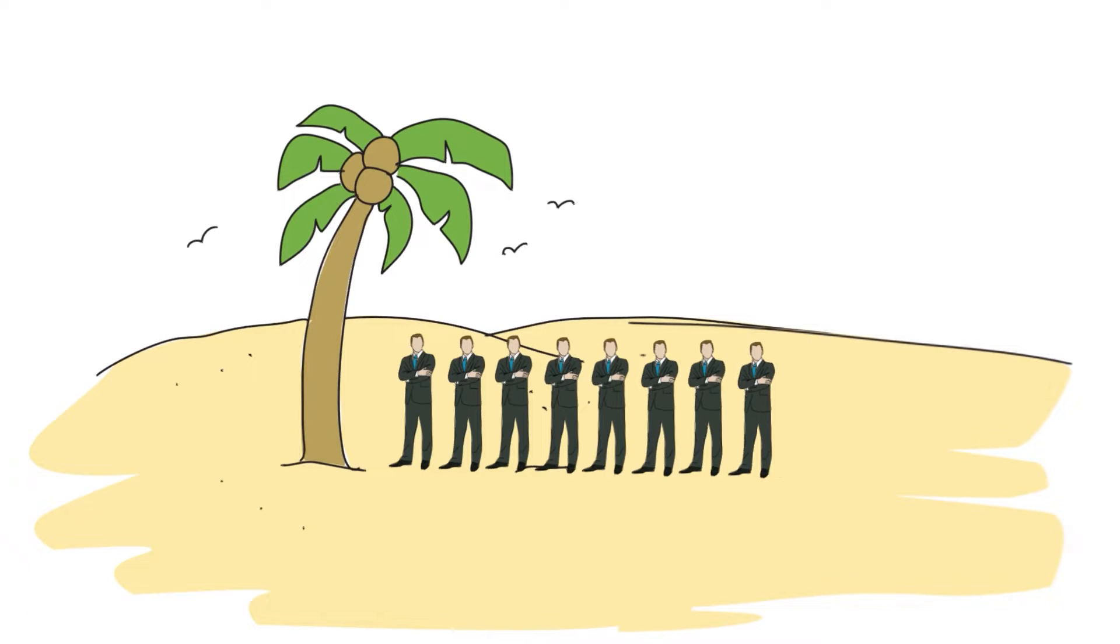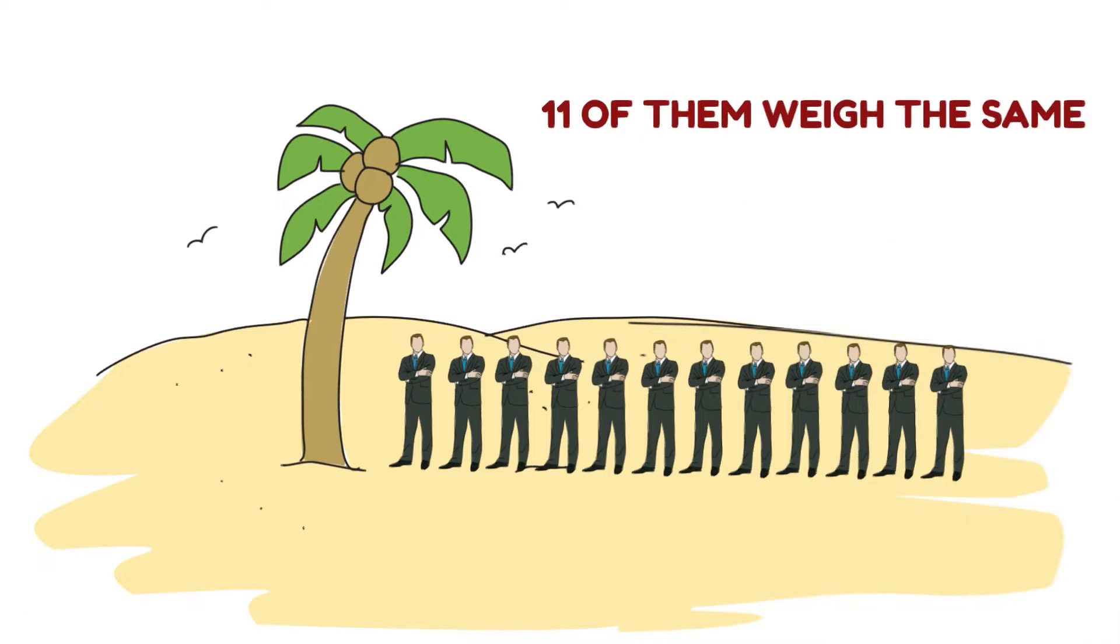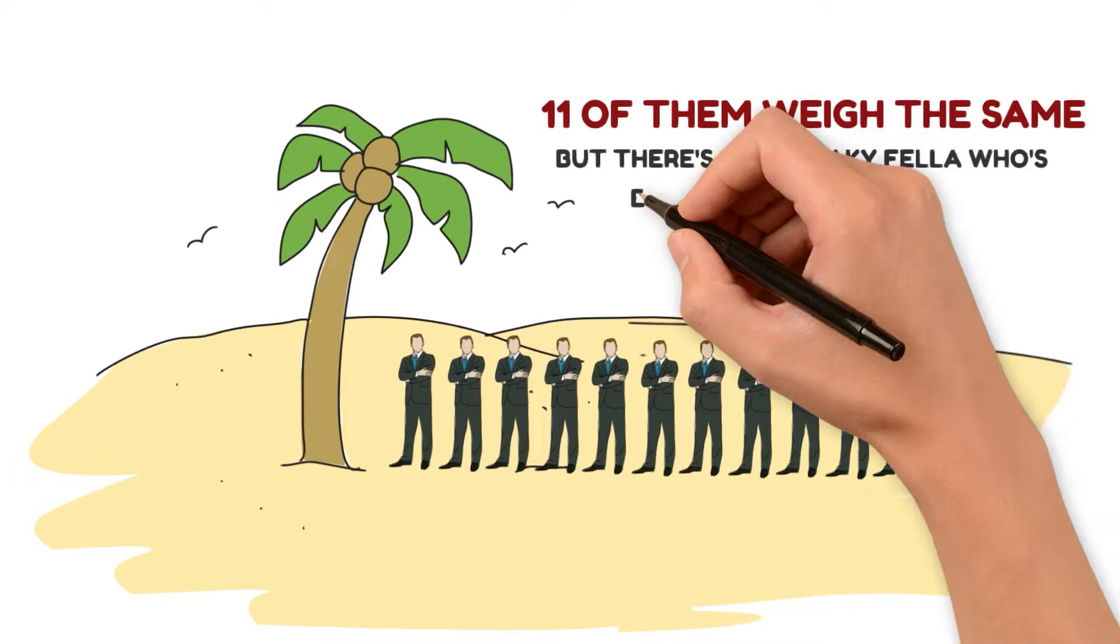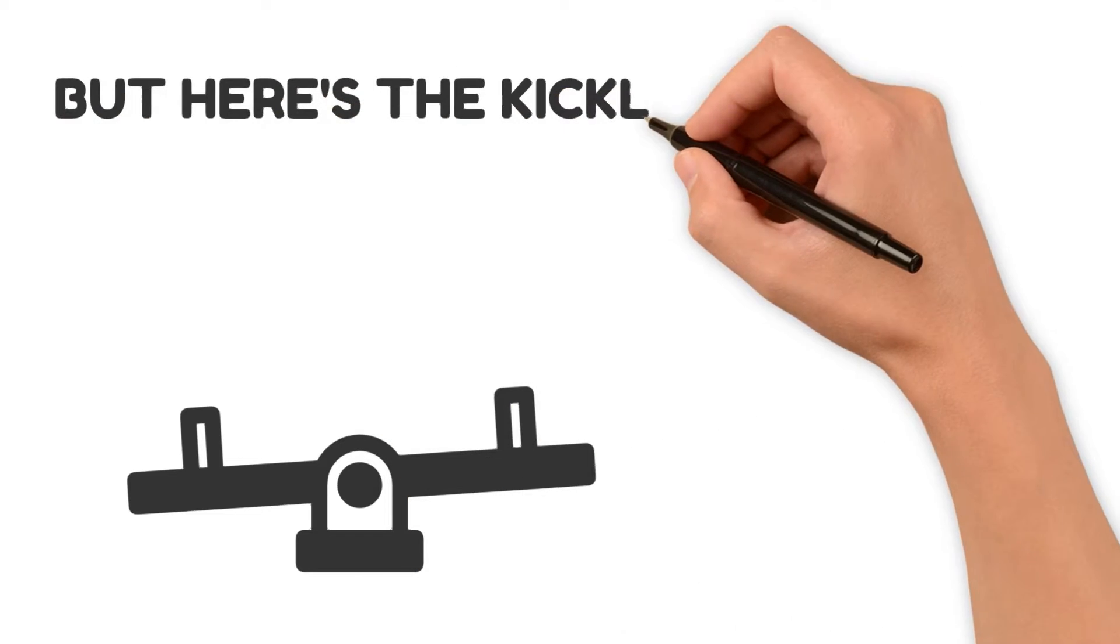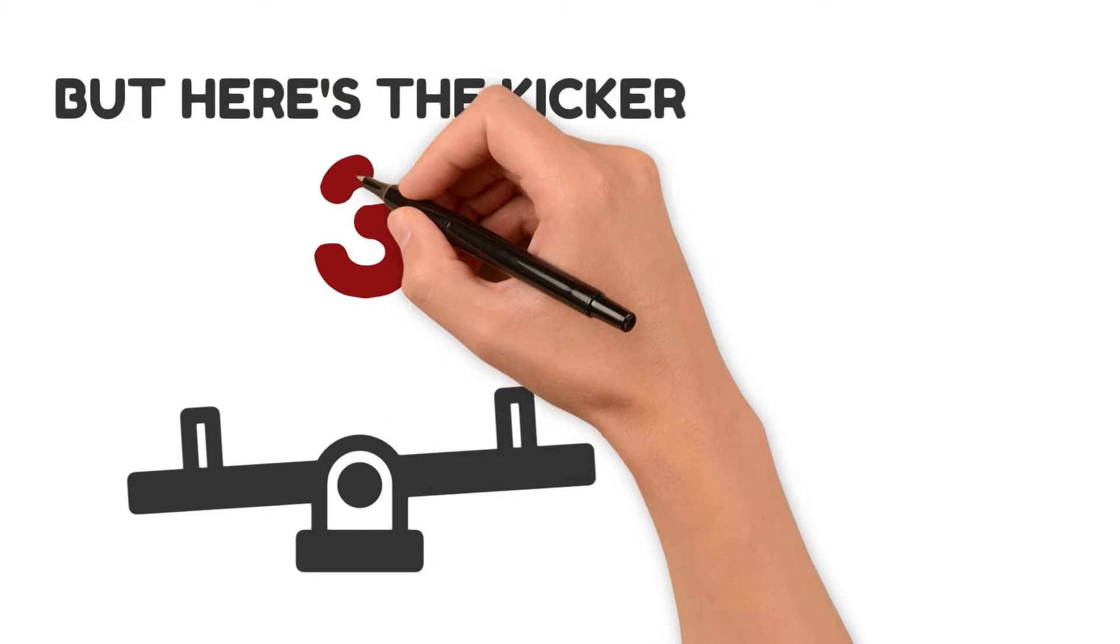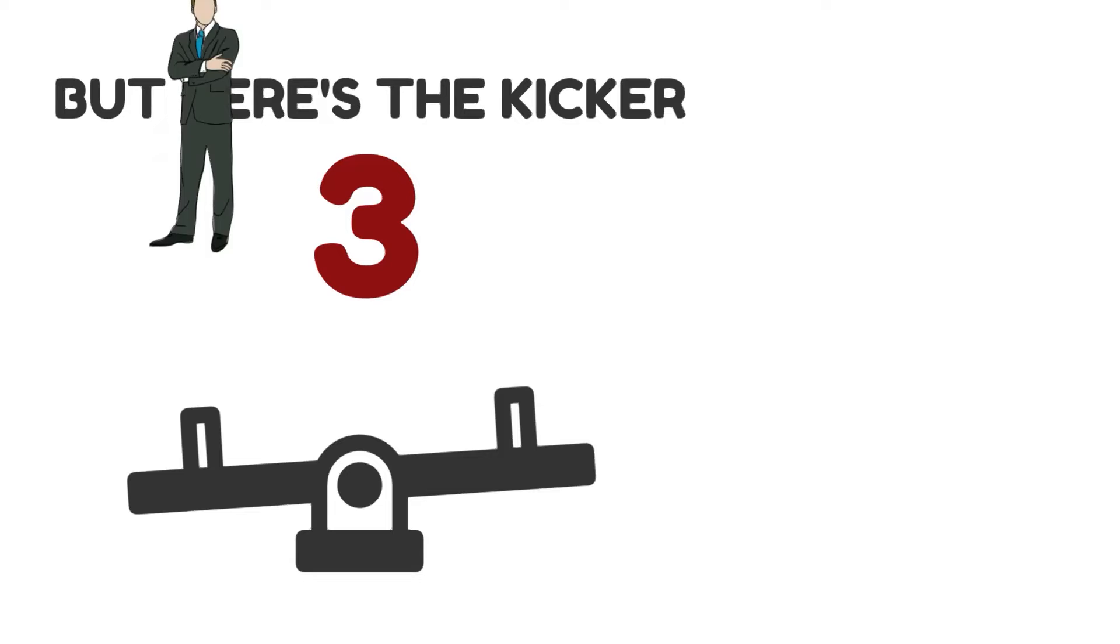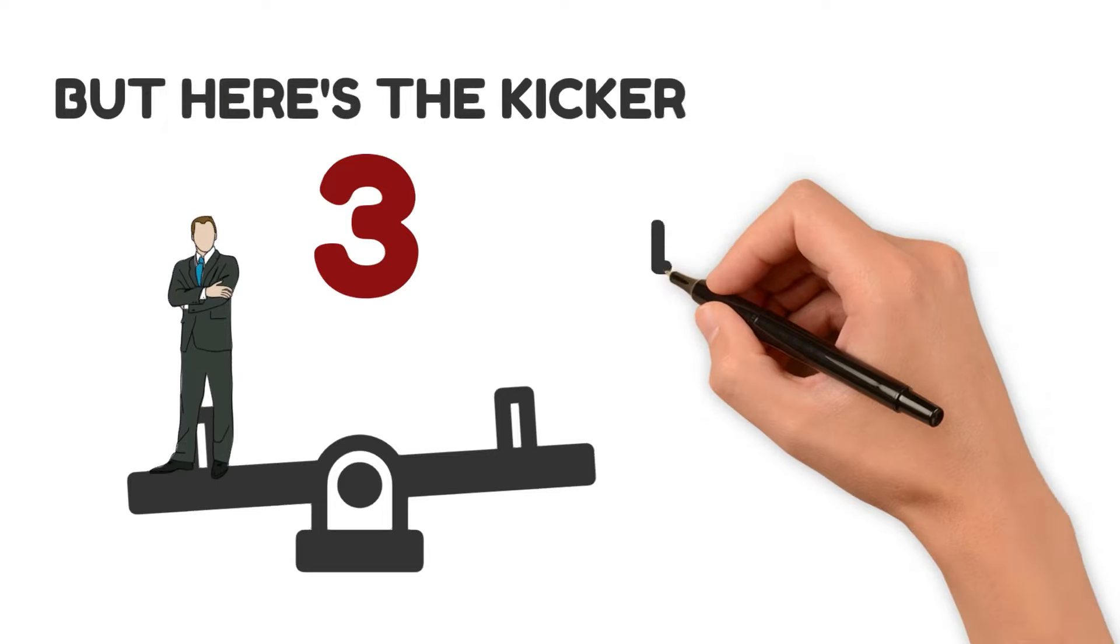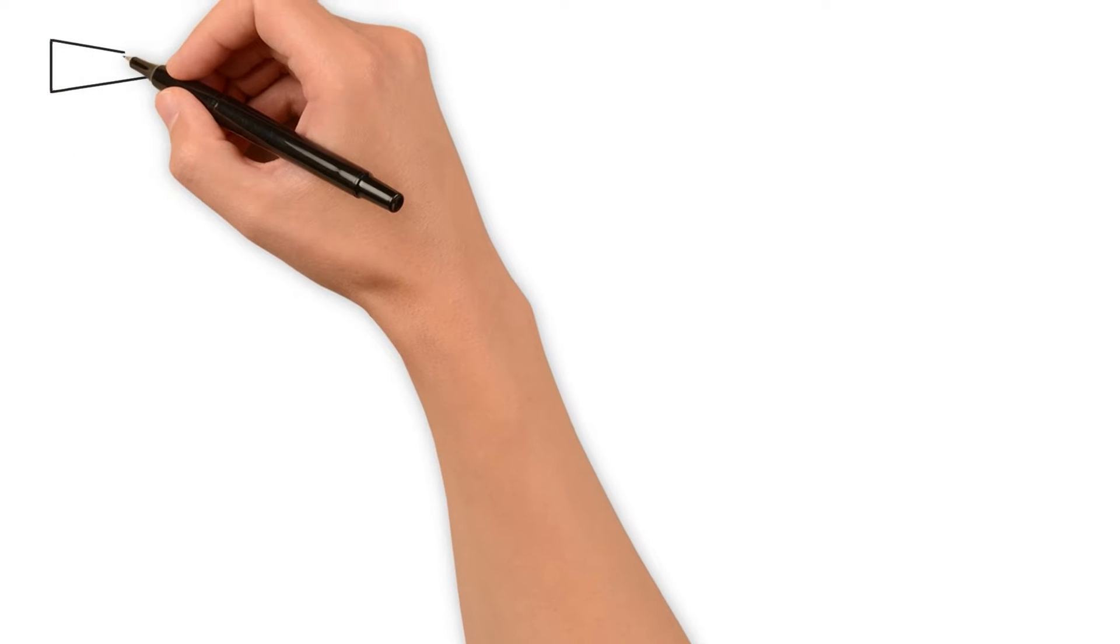12 guys are stuck on an island. 11 of them weigh the same, but there's one sneaky fella who's either heavier or lighter. They've got this seesaw, but here's the kicker. They can only use it three times. So they've gotta figure out who's the odd one out and if it's bulkier or lighter. Take a moment and mull it over.